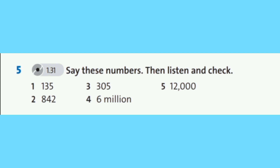And the last exercise for today. Say these numbers, then listen and check. Произнеси эти числа, затем послушай и проверь. Track 1.31. Vocabulary Exercise 5: 1 — One hundred and thirty-five. 2 — Eight hundred and forty-two. 3 — Three hundred and five. 4 — Six million. 5 — Twelve thousand.